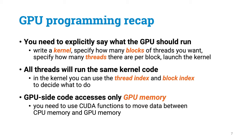So let's recap the key ideas. You need to explicitly say what the GPU should run: you write the kernel, you specify how many blocks of threads you want, and you specify how many threads there are per block, then you launch the kernel. All threads will run the same kernel code, but in the kernel you can use the thread index and block index to decide what to do. GPU-side code accesses only GPU memory, and you need to explicitly use CUDA functions to move data between CPU and GPU.